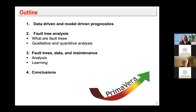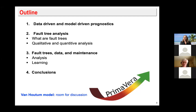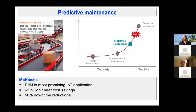Today I had the following outline in mind: I will tell you how we can combine data-driven and model-driven prognostics through fault tree analysis, what fault tree analysis is, how that relates to data and maintenance, and of course end up with some conclusions. I decided to copy the Van Houten model and have some room for discussions, and depending on the amount of discussion I may or may not arrive at the end of my slides.